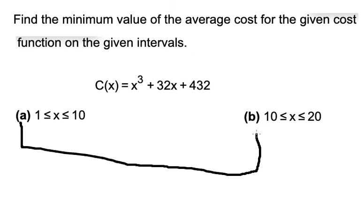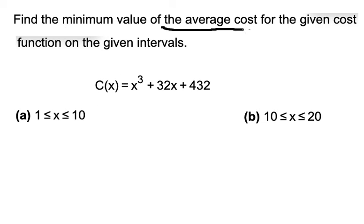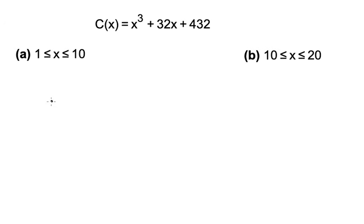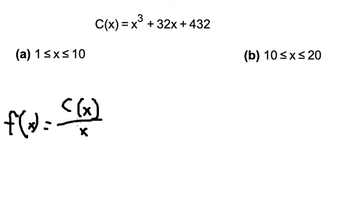We have intervals a and b. This problem is about the total cost, but the question is about the average cost. To find the average cost, we take C(x) divided by x, and I will call this f(x).